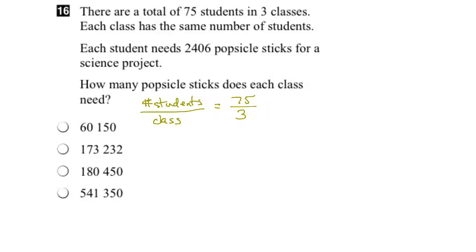So we go 75 divided by 3. 3 goes into 7 twice. 3 times 2 is 6. 7 minus 6 is 1. Bring down the 5. 3 goes into 15 five times. So this equals 25.